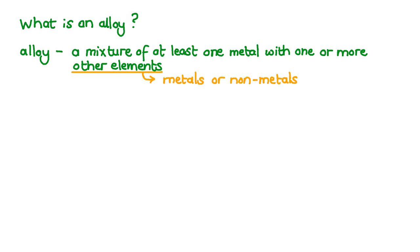An alloy is a mixture of at least one metal with one or more other elements. The other elements can be metals or non-metals. We said an alloy is a mixture. It's actually a solid solution of elements dissolved in each other.